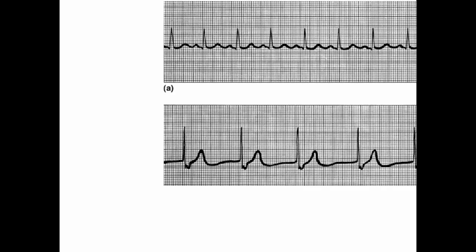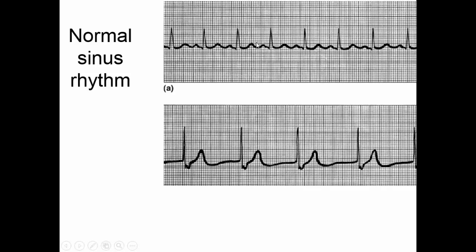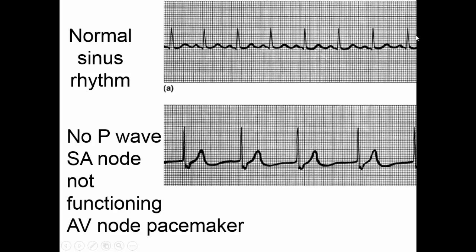Here we see some EKGs. The first one is a normal sinus rhythm — we have a P, QRS, and T wave followed by another P, QRS, and T wave, meeting about 75 times per minute. In the next one, we're missing something: we have QRS and T waves but no P wave. This indicates that the SA node is not depolarizing — it's burned out or not functional. Notice also that the heart rate is now slower, because the AV node is pacing at only about 50 beats per minute.